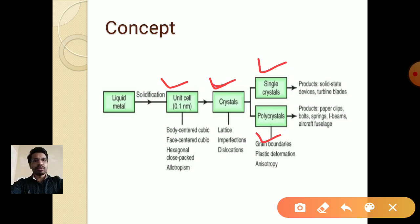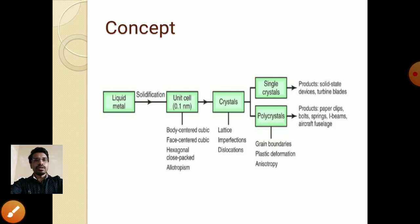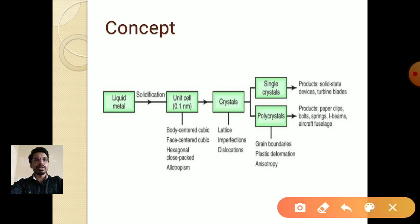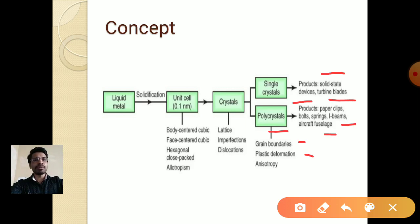These crystals may have some lattice imperfections and dislocations. Single crystals can be used in turbine blades, or in solid state devices like semiconductor devices. Polycrystals — which are clusters of many crystals separated by grain boundaries — can be plastically deformed to manufacture products like aircraft fuselages, high beams, paper clips, bolts, and springs.